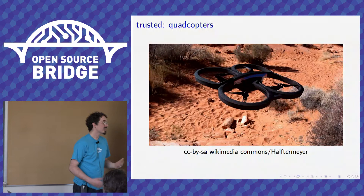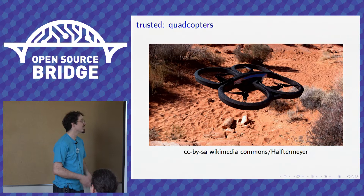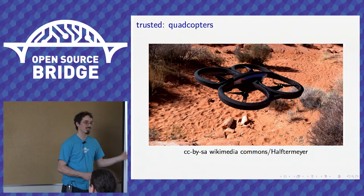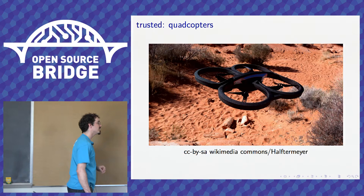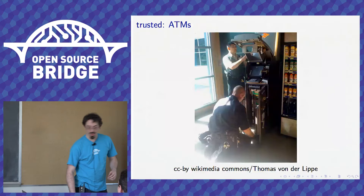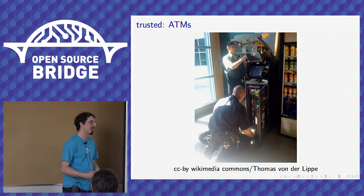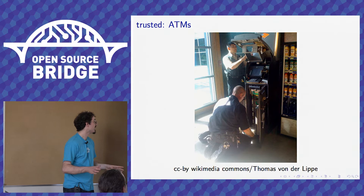Some examples. A bunch of you are probably here because I mentioned quadcopters in the talk description. Quadcopters are a thing that we're trusting. If a quadcopter falls out of the sky and hits somebody, it's a pretty heavy piece of equipment, and even just falling out of the sky is dangerous. If someone is maliciously attacking it, you can do even worse things. We're also trusting ATMs — we care about whether the ATM actually gives us the right amount of money and takes the right amount out of our accounts.